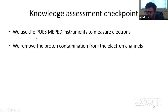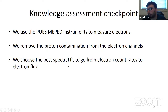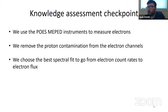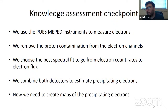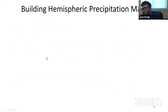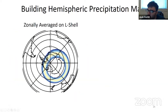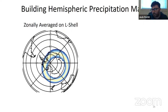So to summarize: we use the POES MEPED instruments to measure the electrons. We have to remove the proton contamination from the electron channels first, then choose the best spectral fit to go from count rates to a differential electron flux — and more than that, a precipitating flux — using both detectors to estimate that. Now we need to figure out how to get this into a model, and the way to do that is to create precipitation maps. Historically this has been done using L-shell, some sort of zonal average, which resembles what an auroral oval would look like. The problem is we know that medium and high-energy precipitation doesn't really look like the oval.